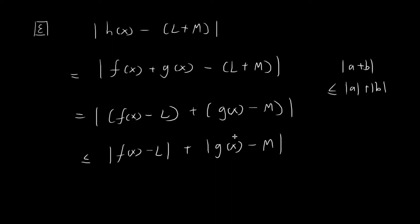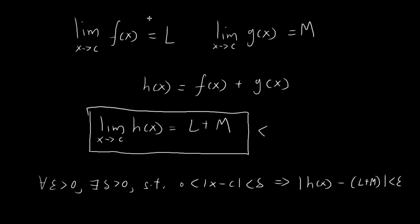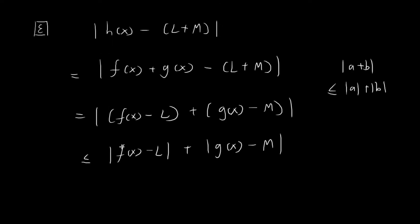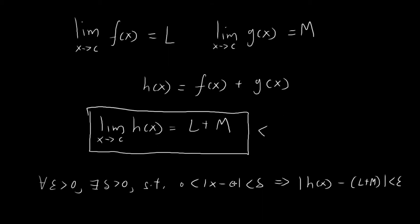Notice that these two terms appear in the epsilon-delta definition of these two limits, and we're already given that both limits exist. That means if x is made sufficiently close to c, then these two terms can be made arbitrarily small. So the entire term can be made arbitrarily small, provided x is sufficiently close to c — which is exactly what we wanted to show. Next I'll show the mathematical details behind how we make these two terms arbitrarily small.